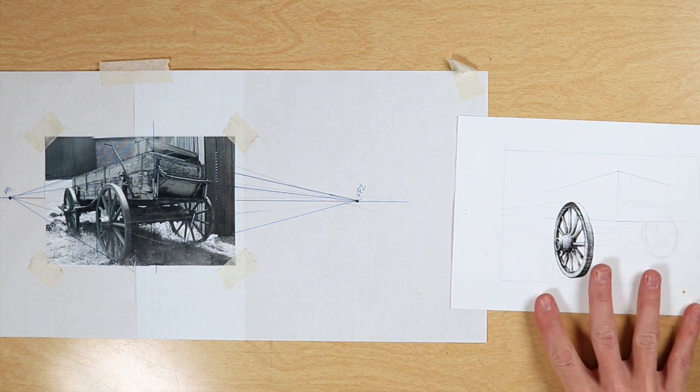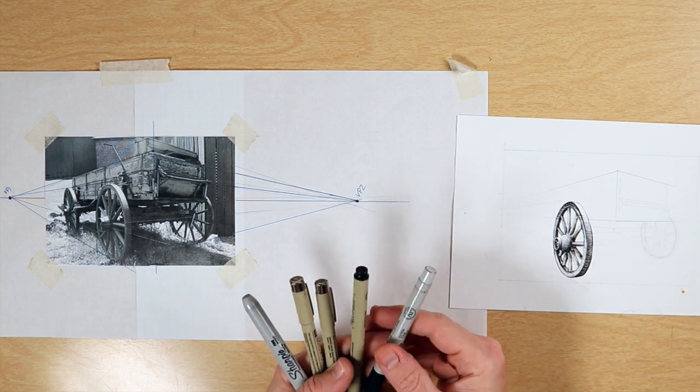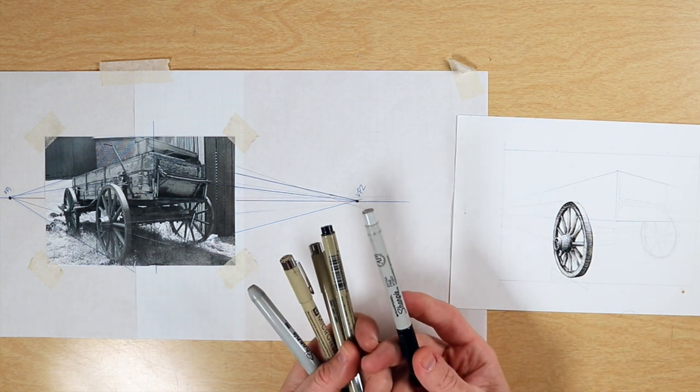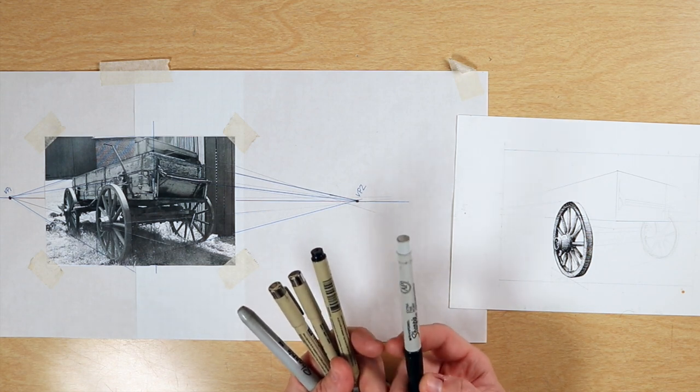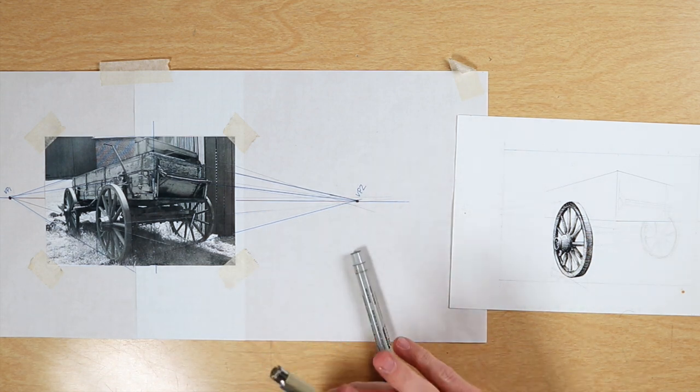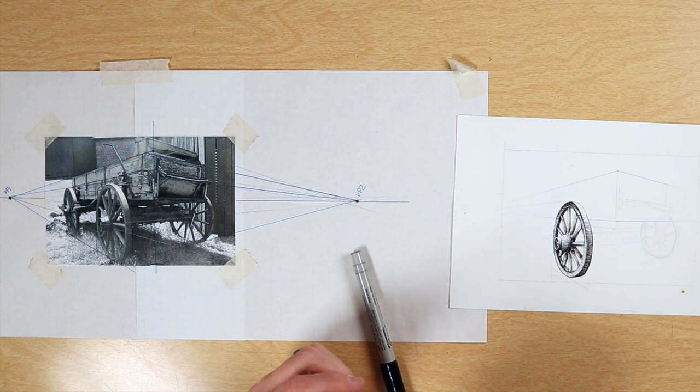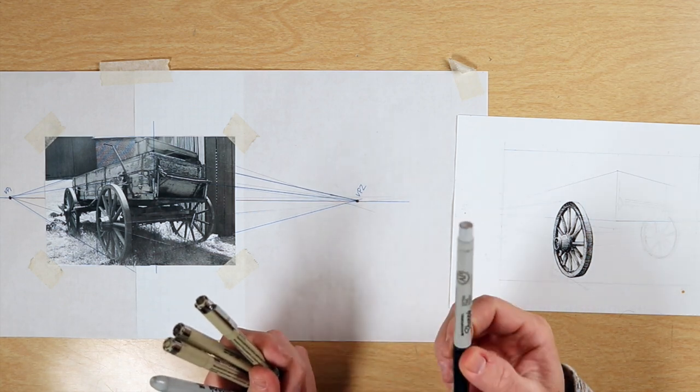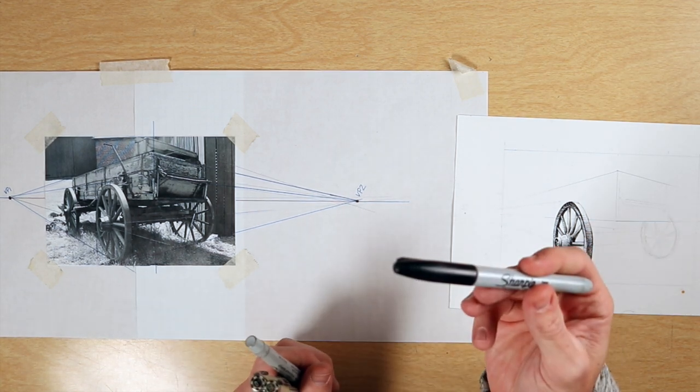As you continue your pen and ink perspective drawing, you should have at least five line weights to start with to achieve your values. You have all three technical pens: 0.1, 0.3, 0.5, but then you also have a fine tip Sharpie and a thick Sharpie.